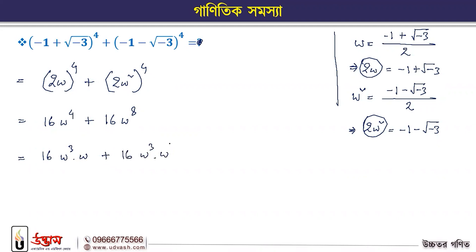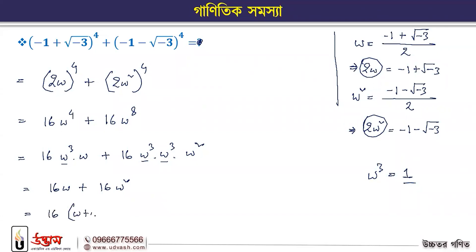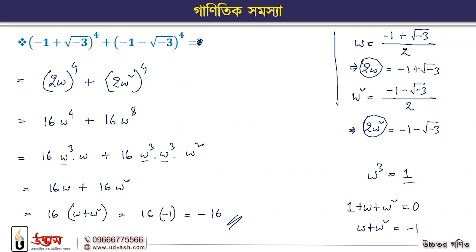Omega to the power 8 is omega cube into omega cube into omega square. Now from the formula, omega cube equals 1. So substituting: only 16 omega plus 16 omega square remains. Taking 16 common: 16(omega plus omega square). And from the formula, omega plus omega square equals minus 1. So the answer is minus 16.